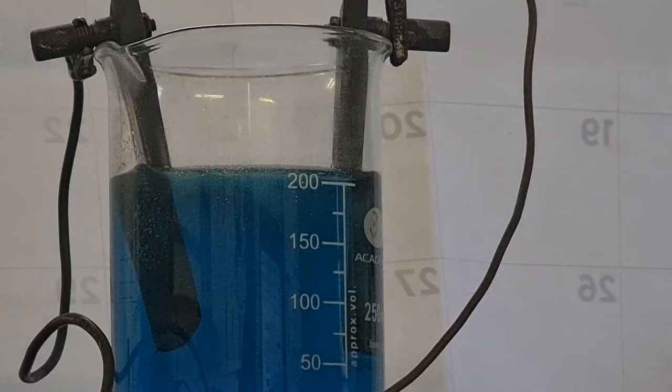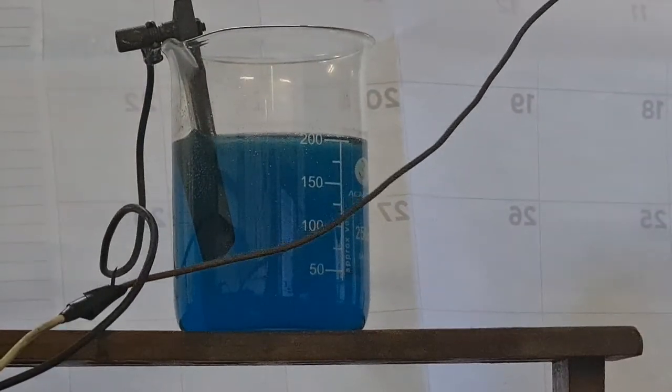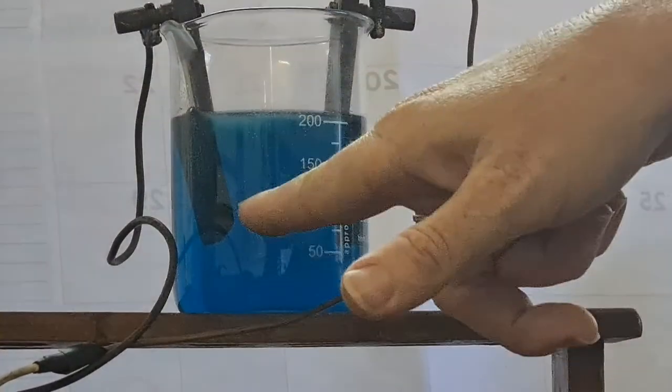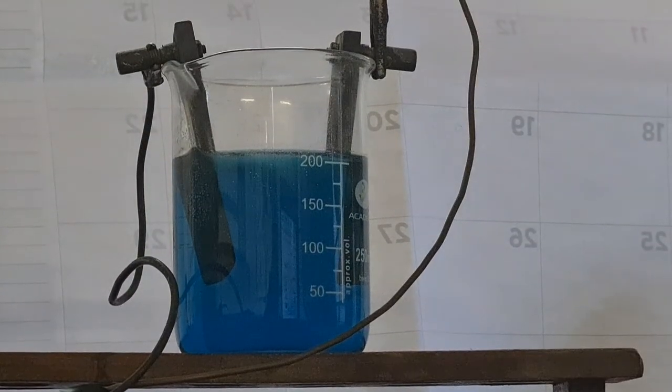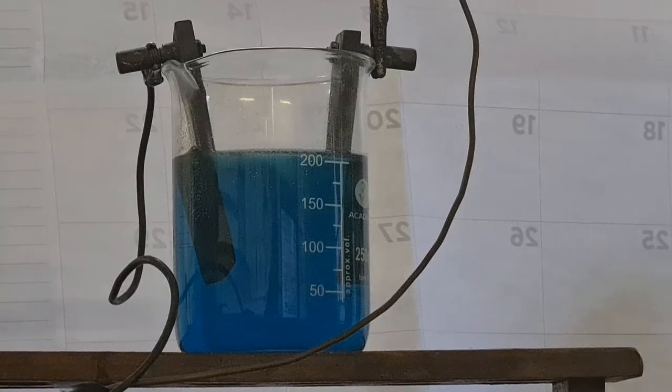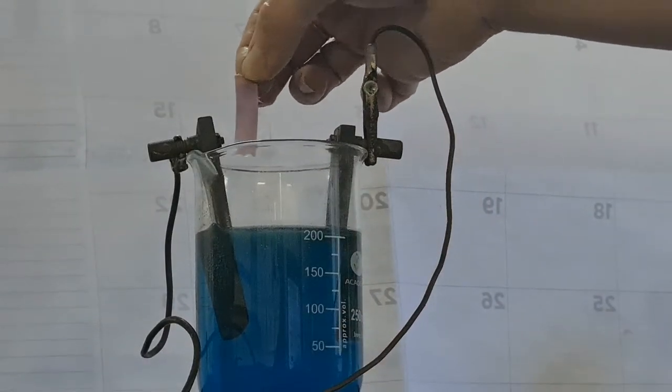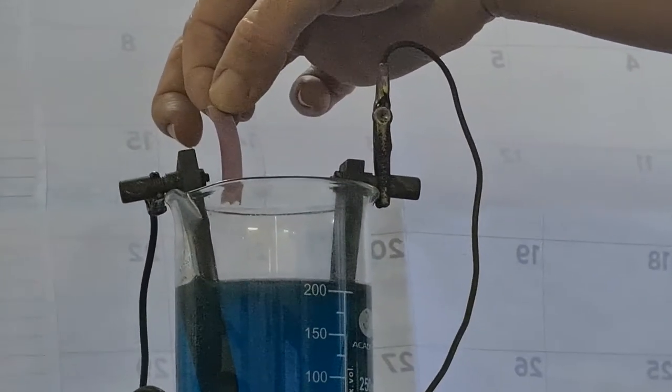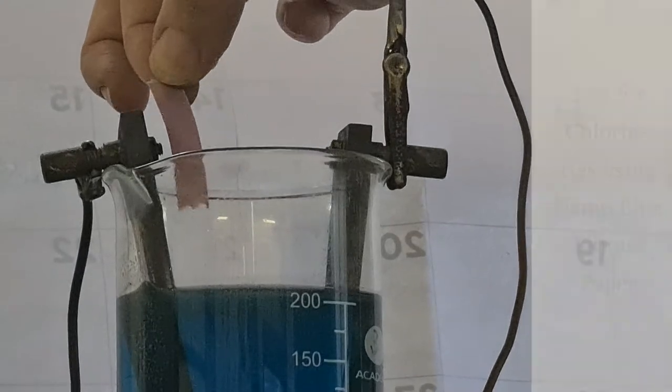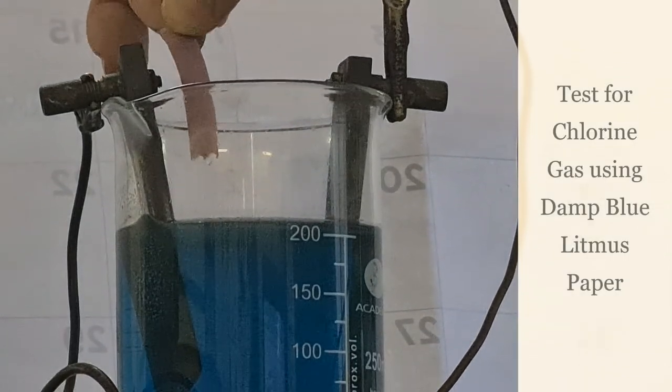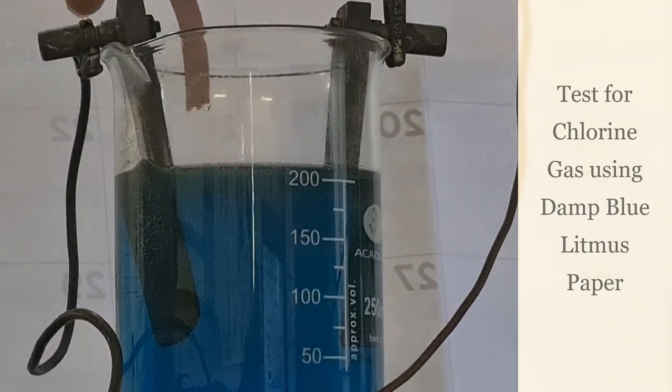We've got some electrolysis of copper chloride here, which I've shown you before. At the cathode, copper is being deposited, and at the anode, we have chlorine gas being produced. I want to show you the test for chlorine gas. We have blue litmus paper. I've just dampened it with some distilled water. I'm just going to hold it above where the chlorine is being produced. The test for chlorine gas is it turns blue litmus paper pink and actually bleaches or removes the color from pink litmus paper. It starts to bleach it to a sort of almost white color.